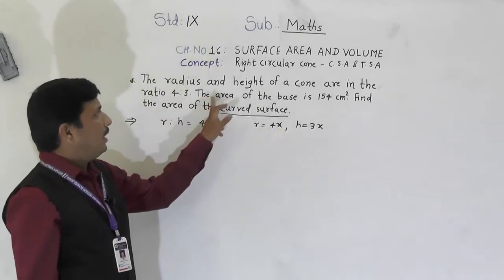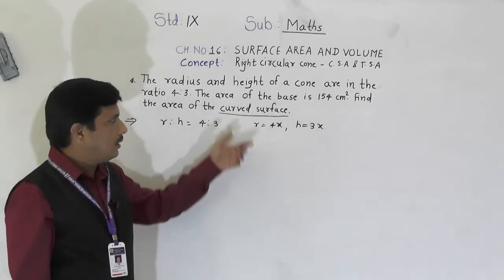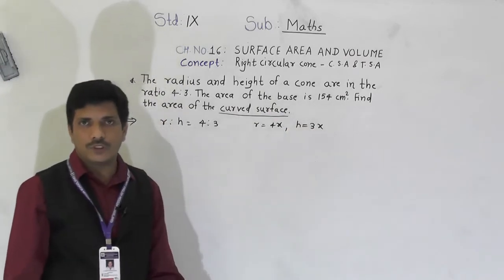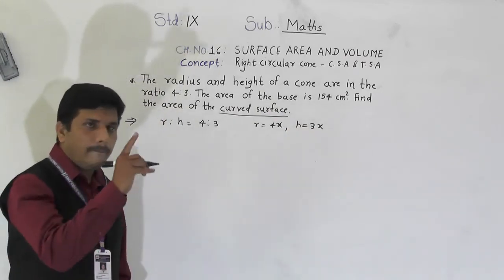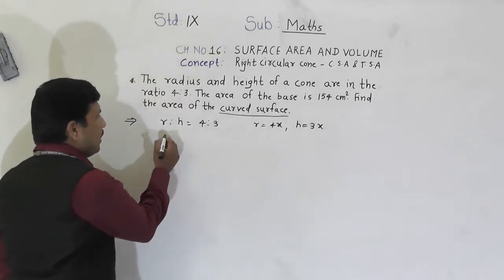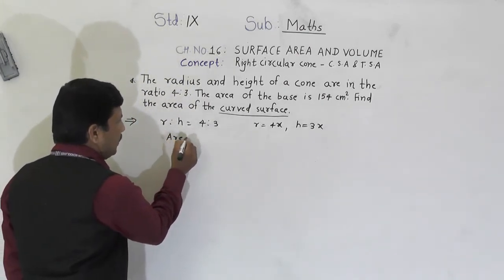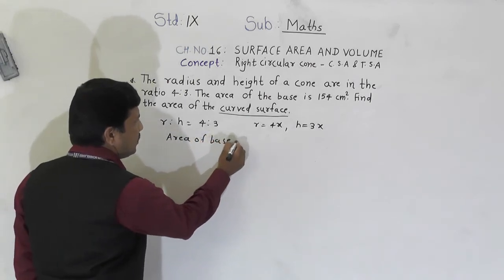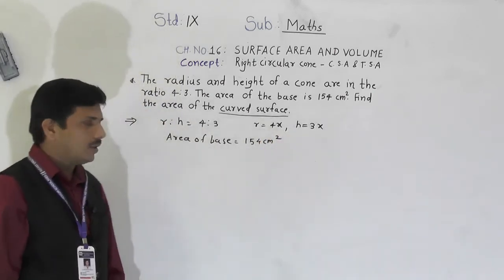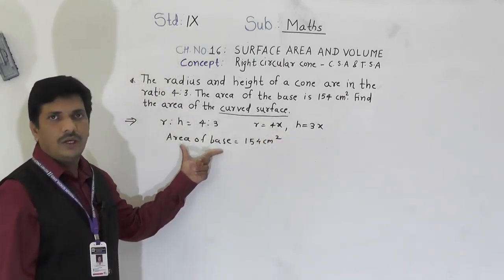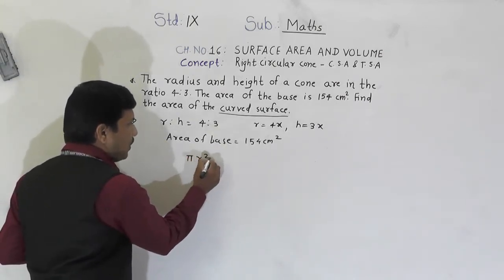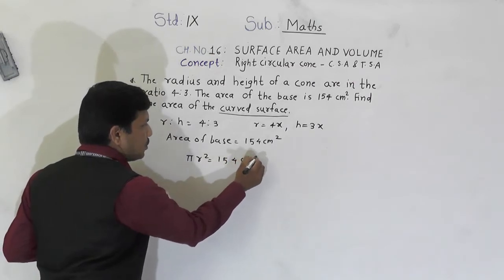The area of the base is given. You know that the base is circular. So area of the base equals 154 cm². Since the base is circular, we use the formula pi r squared. So pi r squared is equal to 154 cm².